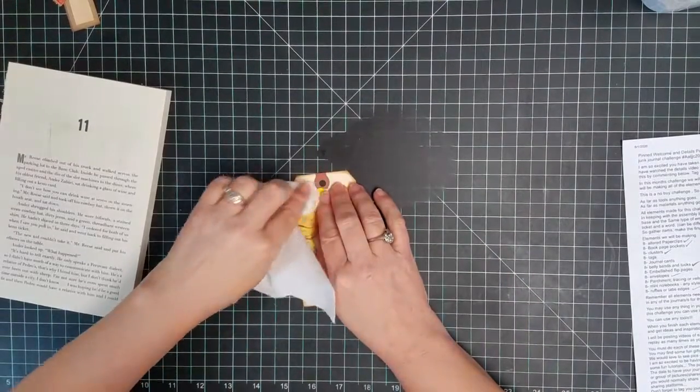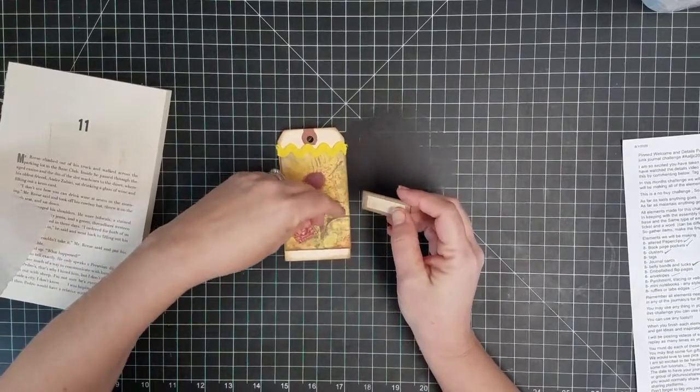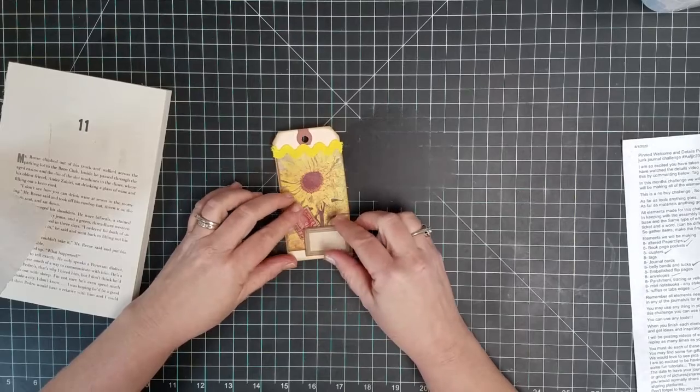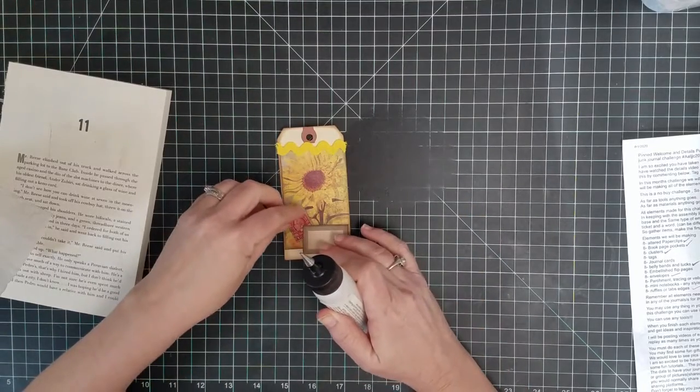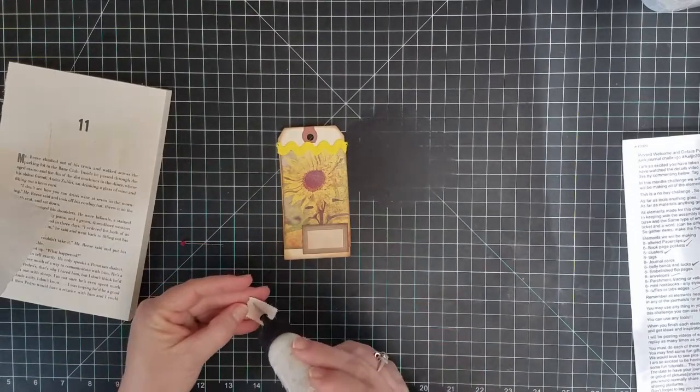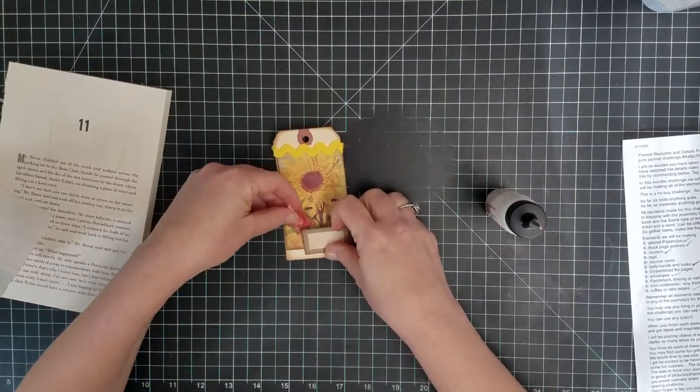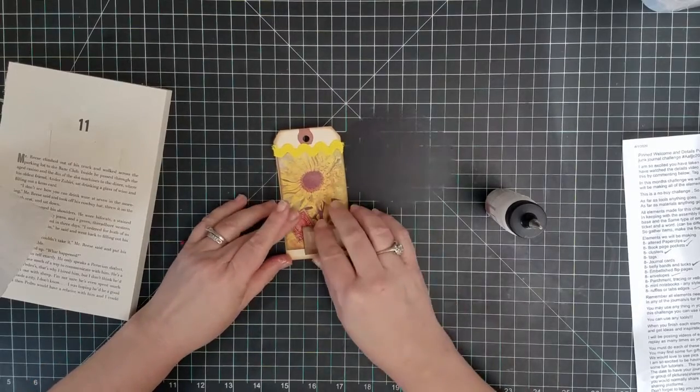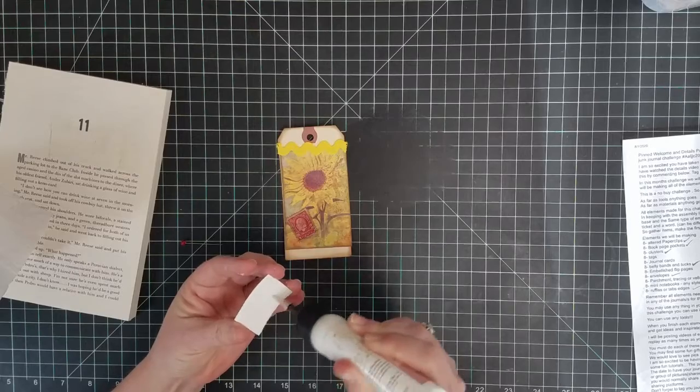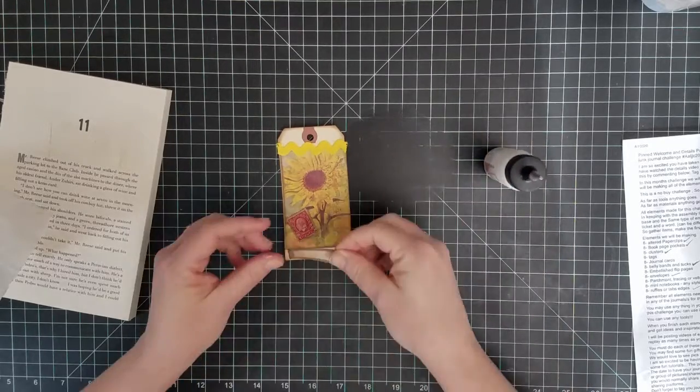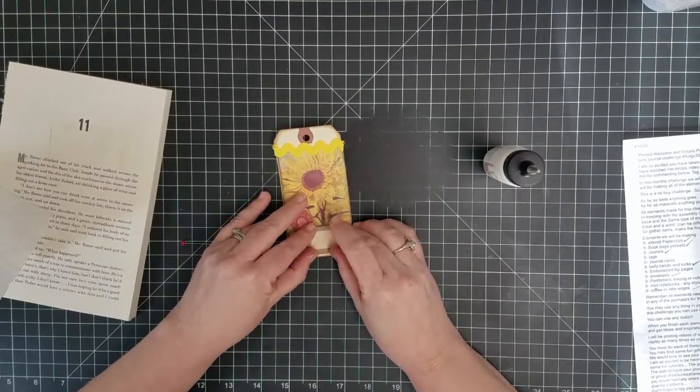Pick up a little bit of excess Fabri-Tac. And then I've got a postage stamp and a Tracy Fox label and just glue those down. There's the stamp and the label.